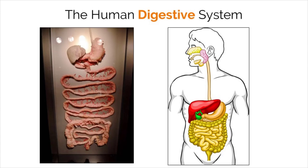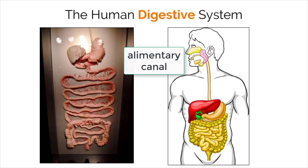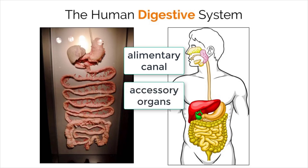The digestive system is split into two different parts. The first part, called the alimentary canal, consists of organs that food passes through. The second part consists of accessory organs that food does not actually touch or pass through. Even though food does not pass through them, they help tremendously with many tasks that make the digestive system function properly.